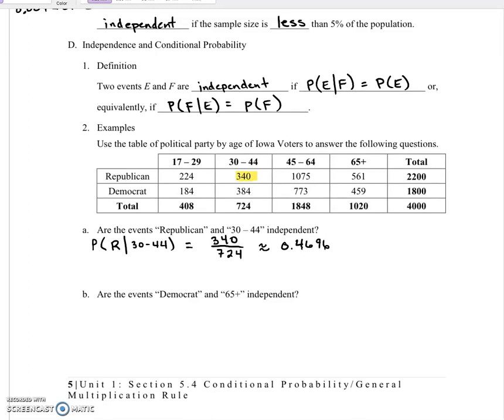So now we just need to calculate the probability of getting a Republican. So for the probability of getting a Republican, there are 2200 total Republicans. And we need to divide that by the total number of people, which is 4000 total people. And that gives us 0.55.